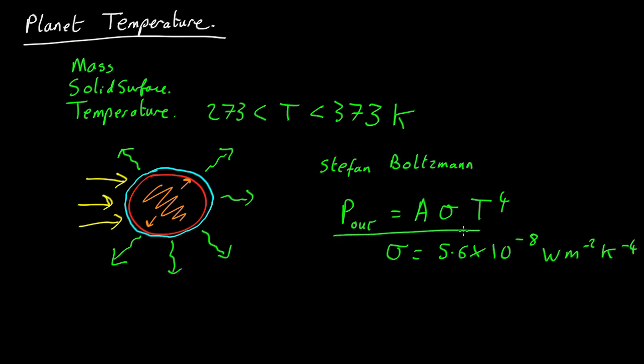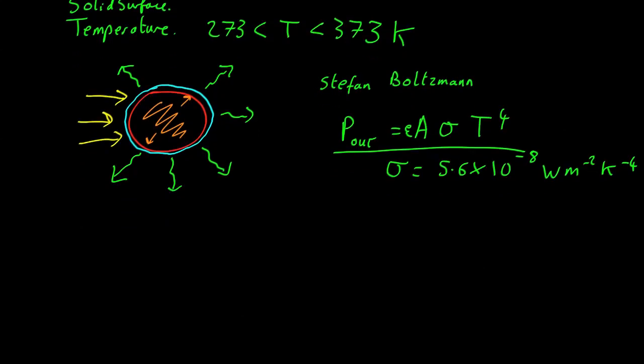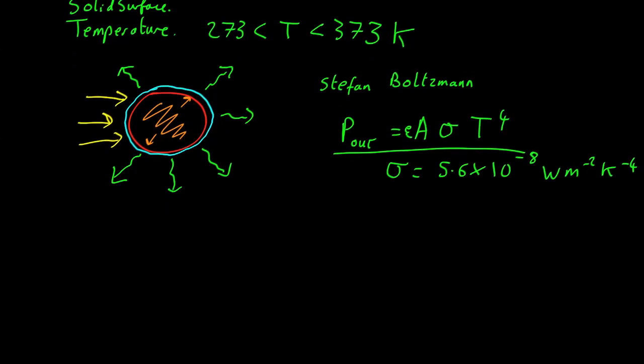Now this assumes something is actually jet black. If something's actually not jet black and most things aren't, there'll be an extra constant in here which reduces the amount of radiation coming out. But for the moment, let's assume that constant equals 1. Crude approximation. So that's the heat going out, which depends on the temperature.